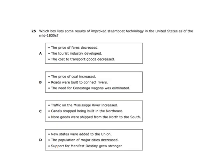Which box lists results of improved steamboat technology in the United States as of the mid-1830s? The price of fares decreased — as technology got better, things got cheaper. The tourist industry developed — better transportation meant more people could become tourists. The cost to transport goods decreased — it was cheaper and faster to move things further, so the prices of those things became cheaper.